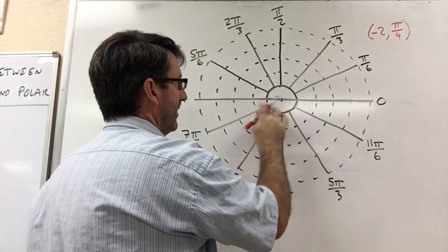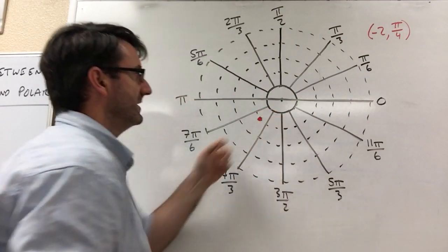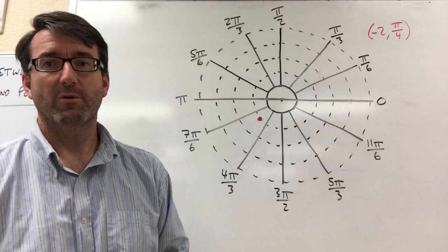2. So if we go 1, 2 on that same line, right there is going to be the point, negative 2 pi over 4.